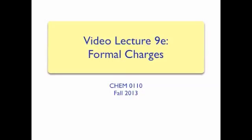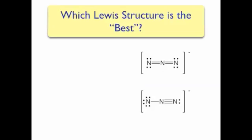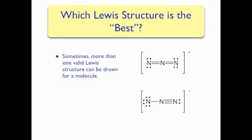Video Lecture 9E: Formal Charges. Sometimes it's possible to draw more than one valid Lewis structure for a molecule. The structures on the right are two valid Lewis structures for the azide ion, N3-, which is commonly used to inflate airbags since it decomposes to form nitrogen gas.